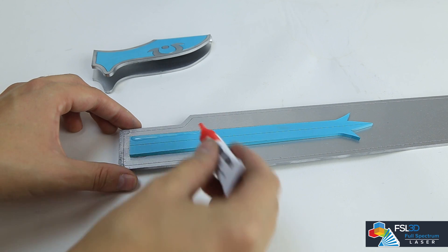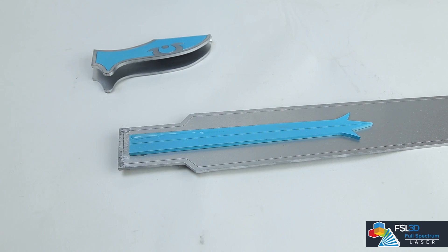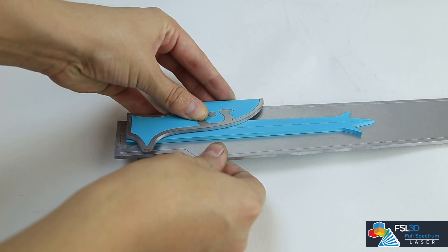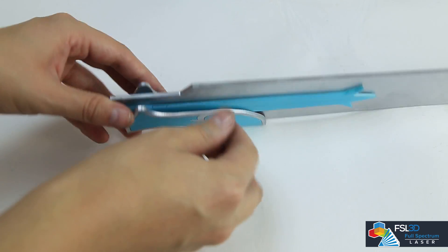Add glue to the contact points around the blade wrap and align it around the blade. Be sure not to cross over the line that was marked for the handle slot.